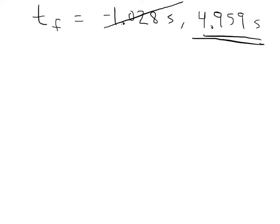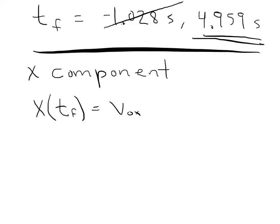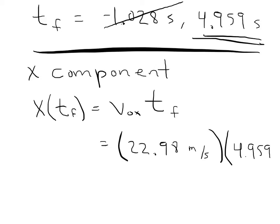Now we can use that time of flight in the x component. We know how long the ball was in the air, so we can ask how far did it go. The x position at time t_f is just V₀x · t_f, because there's no acceleration in the x direction and the initial x position is zero. With V₀x = 22.98 m/s and t_f = 4.959 s, we get x = 113.96 meters.